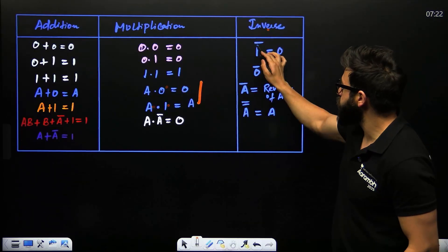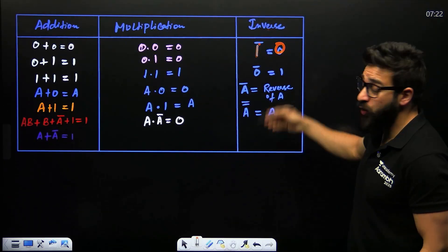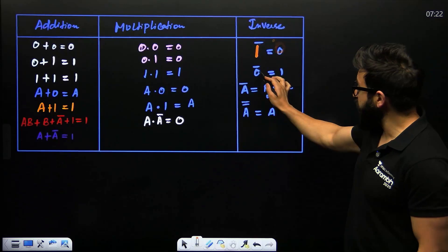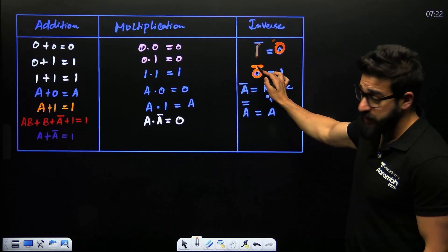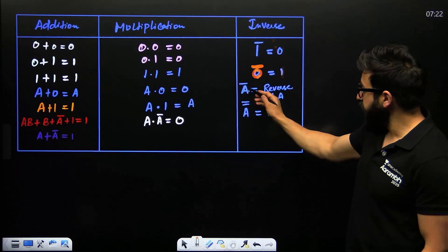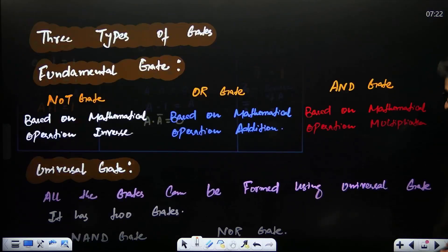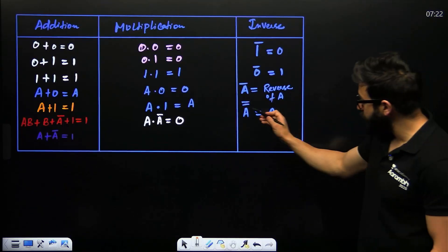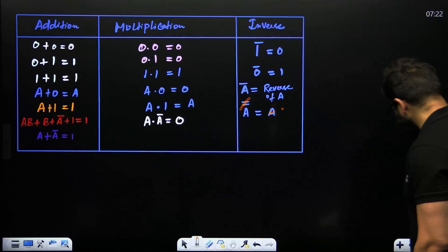Inverse means doing the reciprocal: the inverse of one is zero, the inverse of zero is one — that is zero-bar equals one. A-bar is the reverse of A. If you have a double bar over A, the double bar cancels and it will simply be A.